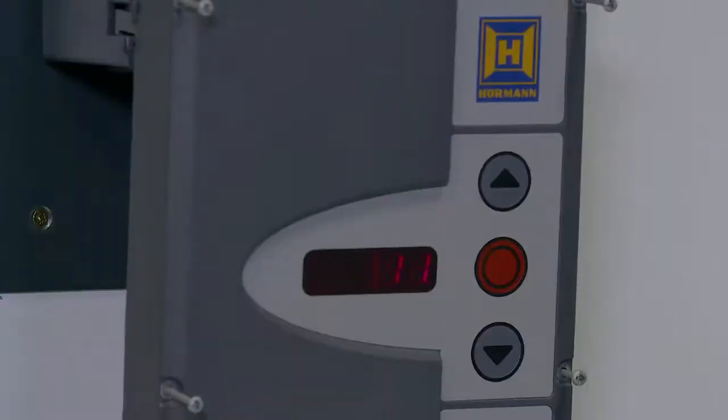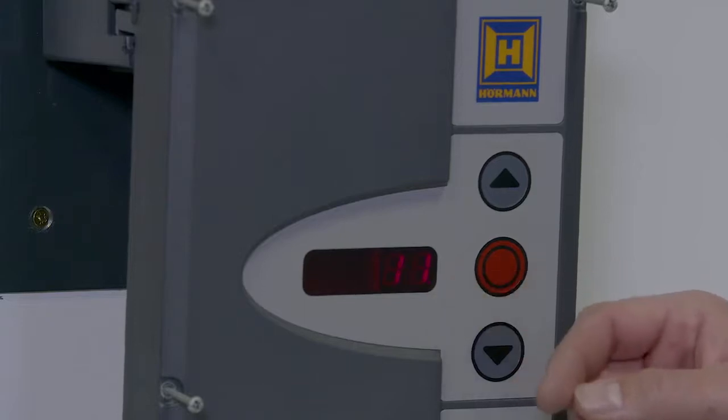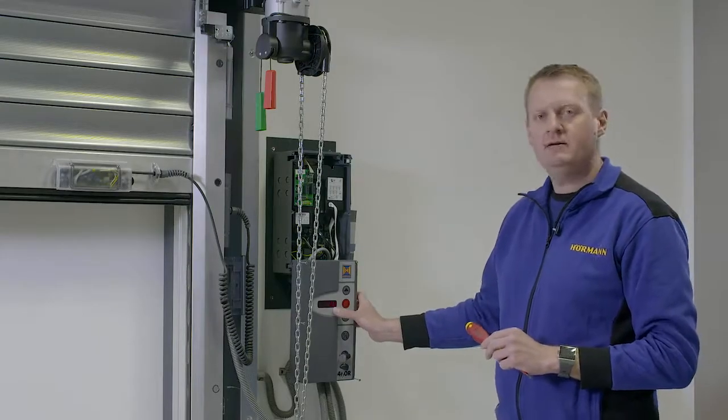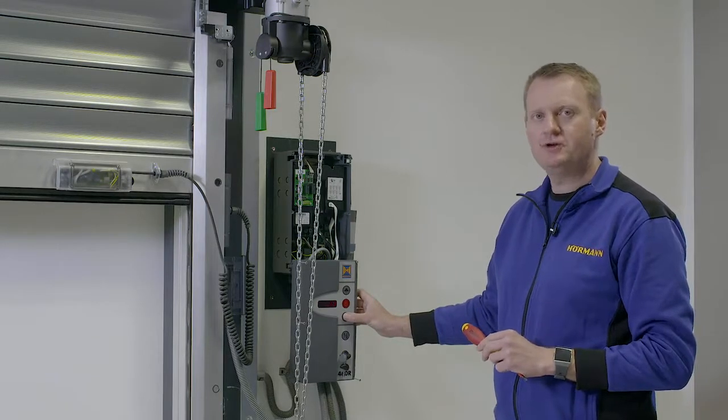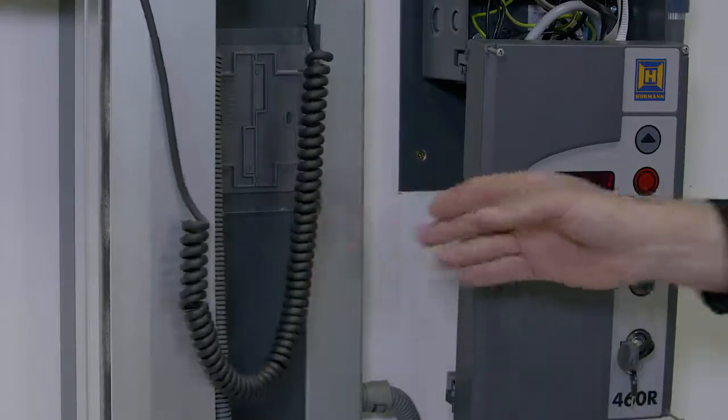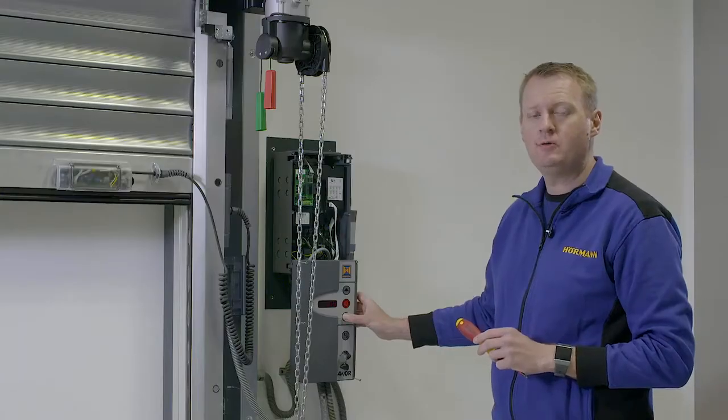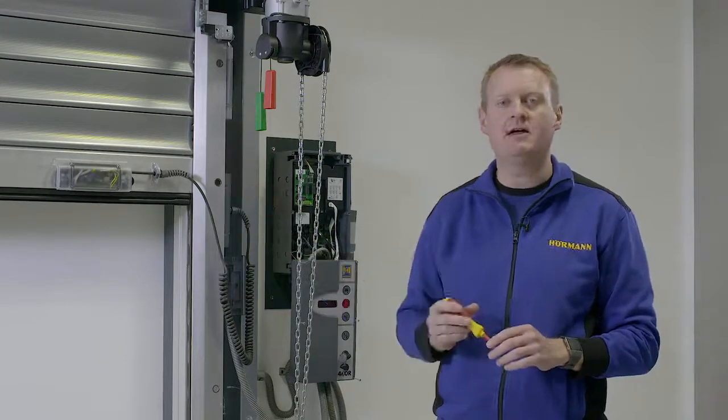A common fault code is code 11. This is the infrared sending receiver in the bottom rail. With 11 showing on the display, press and hold the down button. If the door doesn't close, the fault will probably lie with the curly cable. If the door does close on dead man control, the fault will probably be with the infrared sending receiver in the rubber.